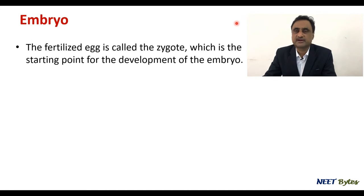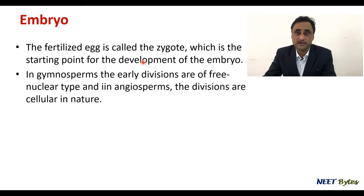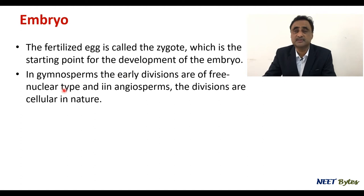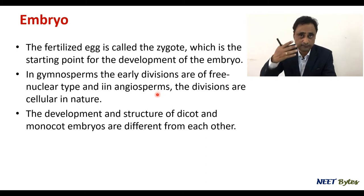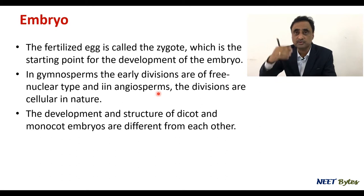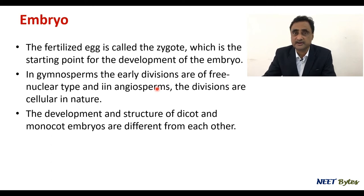As we know, a fertilized egg is called a zygote, which is the starting point for the development of the embryo. If you compare gymnosperm and angiosperm, the basic difference is that in case of gymnosperm the early division is free nuclear, but in angiosperm the divisions are cellular — meaning each division is followed by wall formation. The development of dicot and monocot are entirely different, but up till the four-cell stage they are similar; beyond the four-cell stage the development is different.